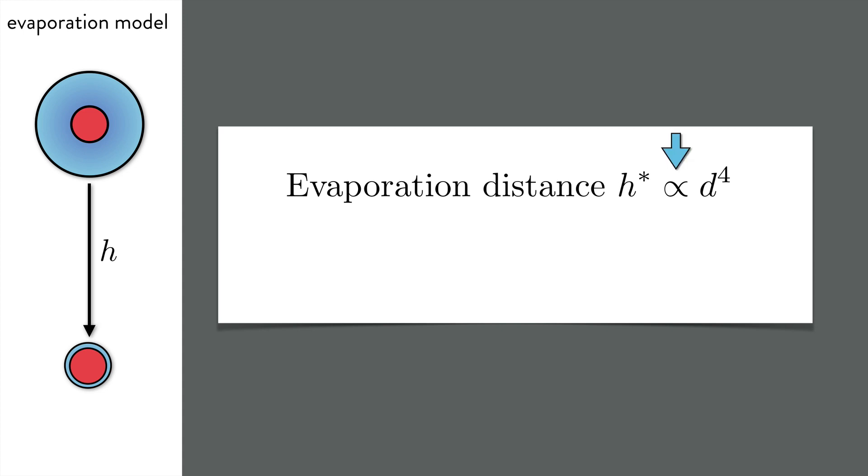The symbol here, which you may not have seen before, means proportional to, or that h* is some unspecified constant times the fourth power of the diameter. The fourth power is really significant because it means that numbers that are already small get incredibly small, while numbers that are large get incredibly large.